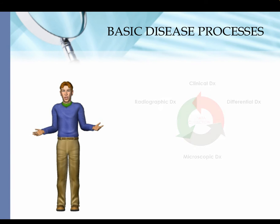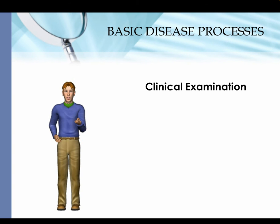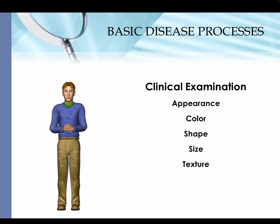The most common tool used when looking at a lesion is the clinical examination of the lesion. The clinical examination will include things like what the lesion looks like, its color, shape, size, and texture. It can also include how the lesion feels when it is palpated or touched.